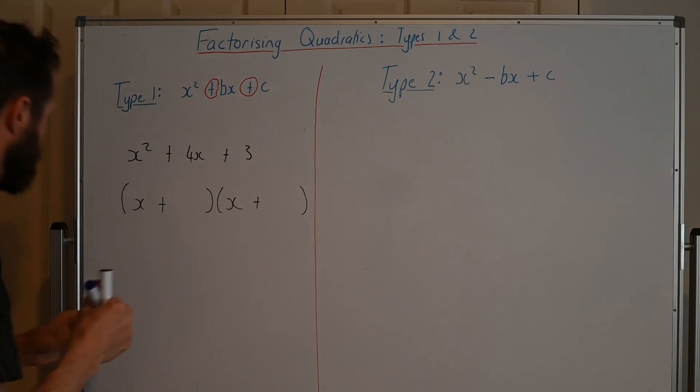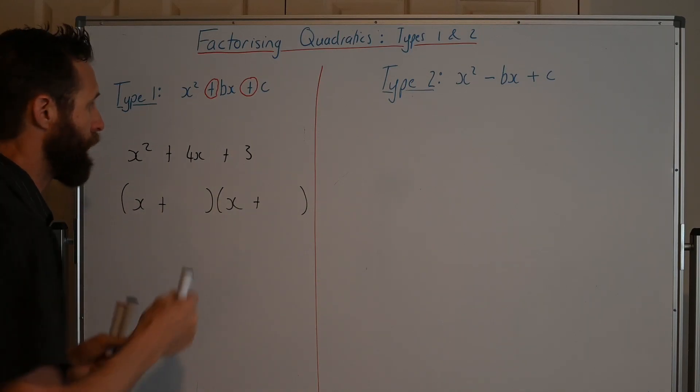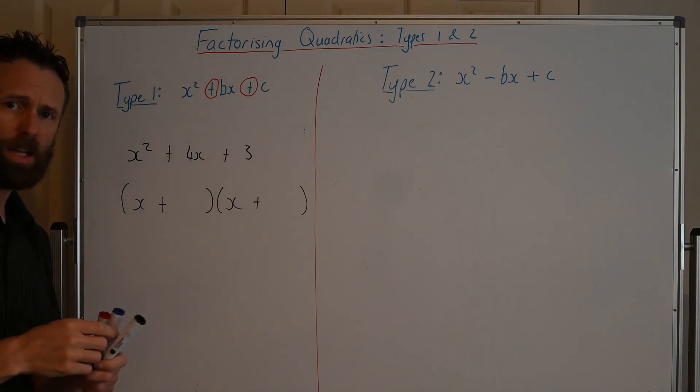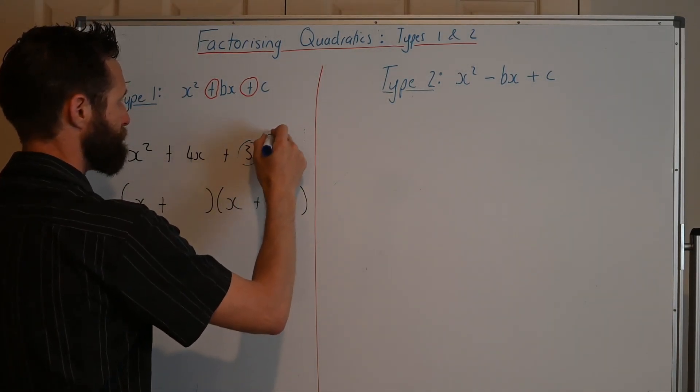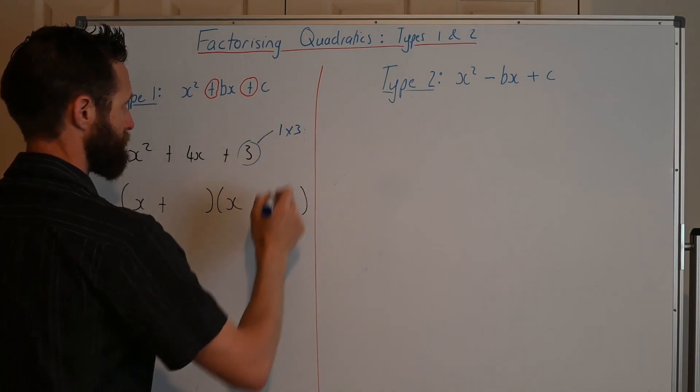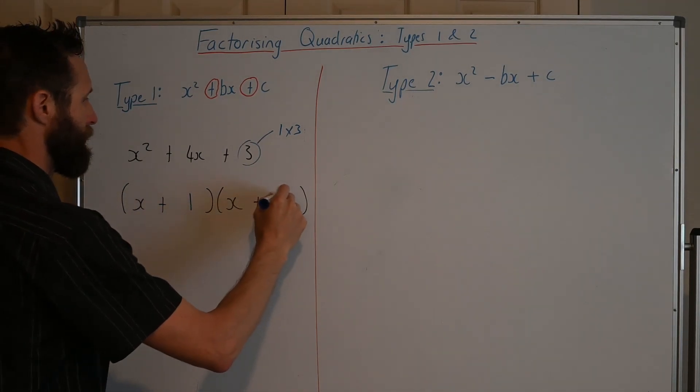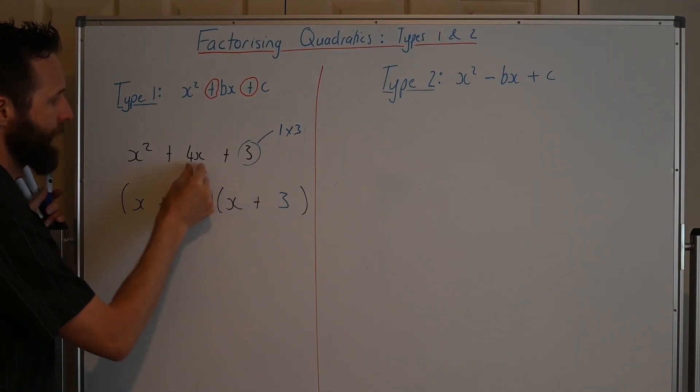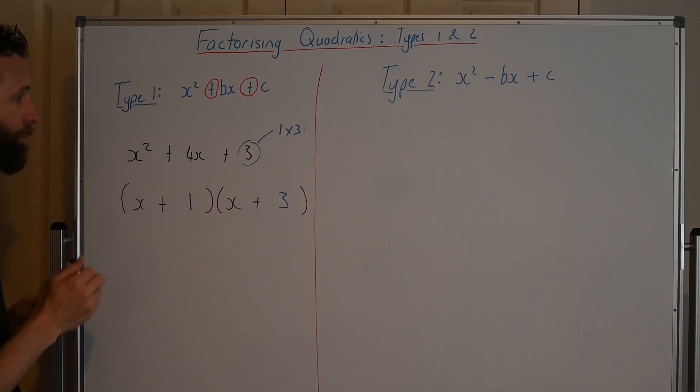Now, how do we get this last number here? Well, it's this times this. So all you need to do is figure out what are the factors of 3. Well, 1 times 3 and that's it. So we know straight away that we've got a 1 here and a 3 here. And what you'll find is that these two numbers here should add up to that number there. Positive 1, positive 3, positive 4. Perfect.